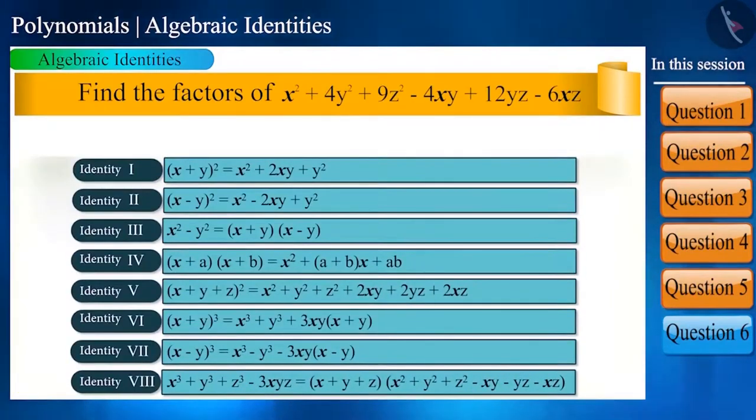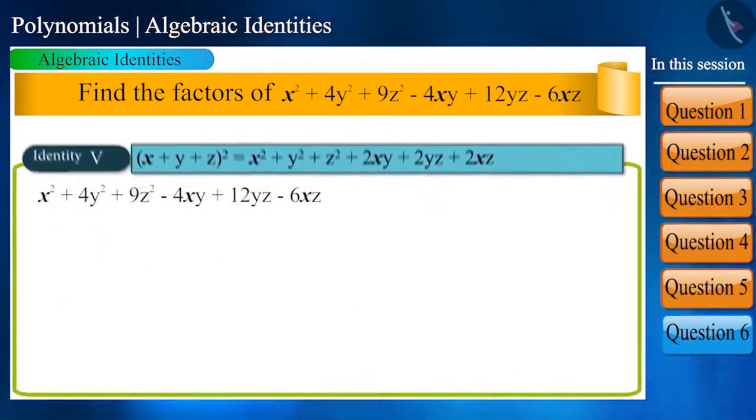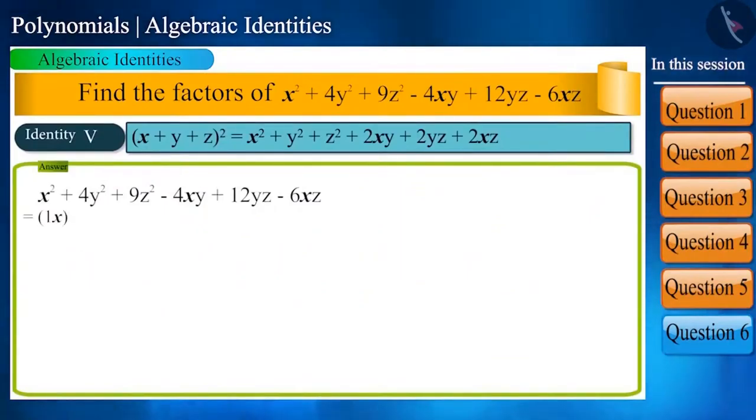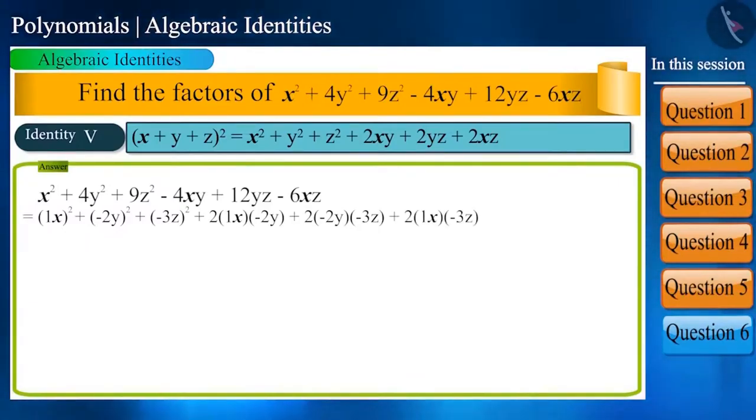And now, we will write it as identity 5. Now, this will happen, which we will write in factor terms as follows.